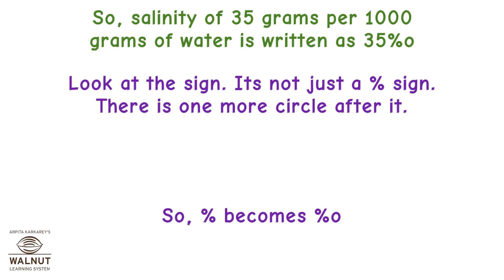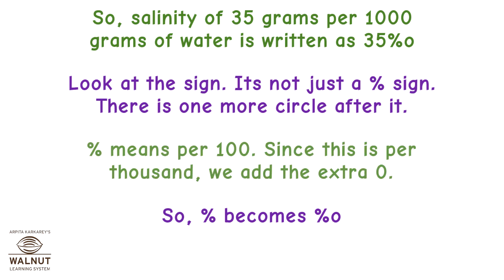Look at the sign — it's not just a percentage sign. There is one more circle after it. Percent means per 100; since this is per 1000, we add the extra zero. So percent becomes per 1000.